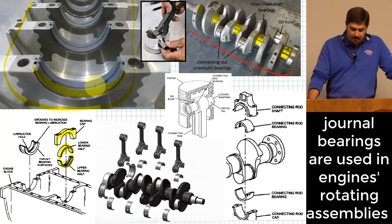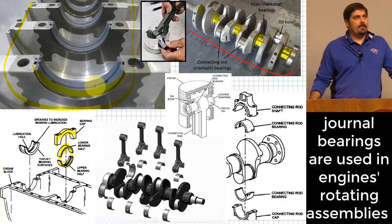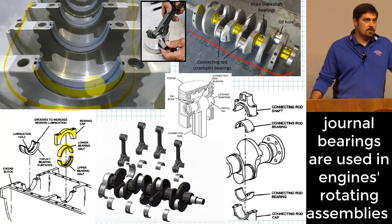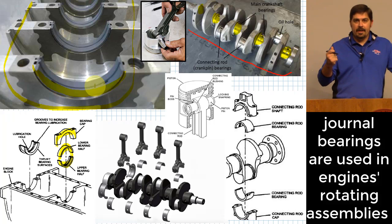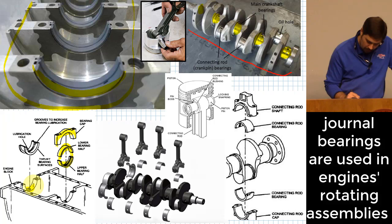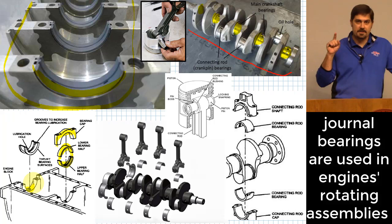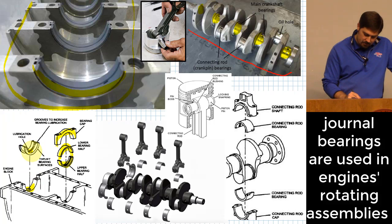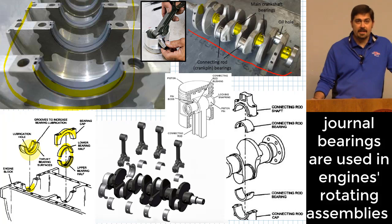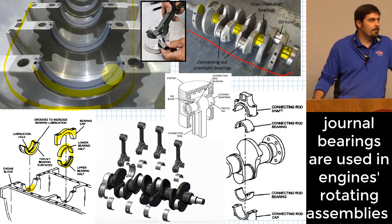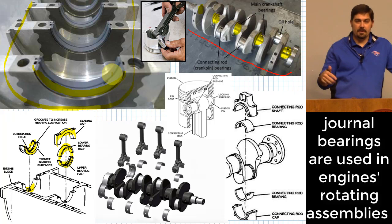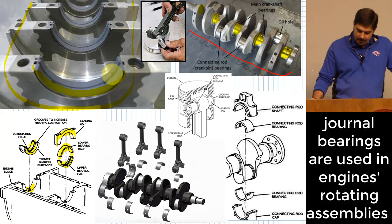Journal bearings in car engines use what's called forced lubrication — an oil pump intentionally introduces oil into the bearings where it's needed. You actually see a lubrication hole built into the engine case: a pressurized tube that forces oil through a small hole in the bearing insert into the region that needs it. There's also often a groove on the inside to help distribute oil all the way around, reducing the chance of any region being without oil.